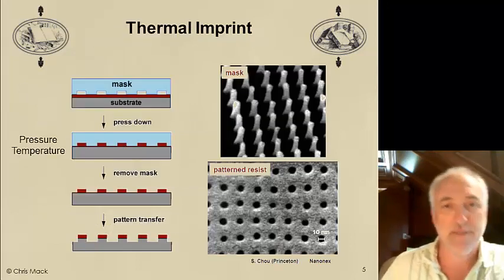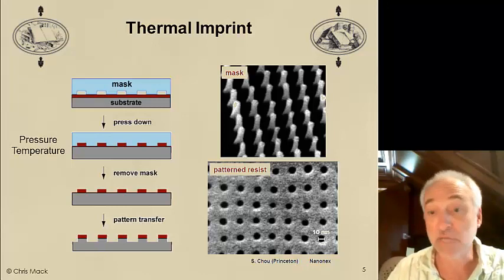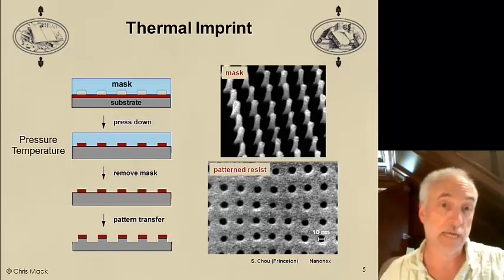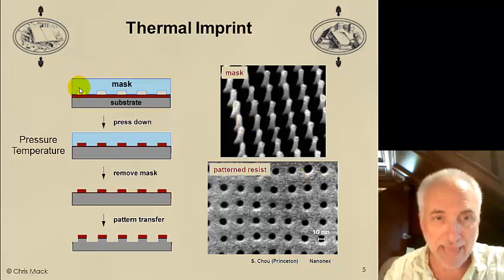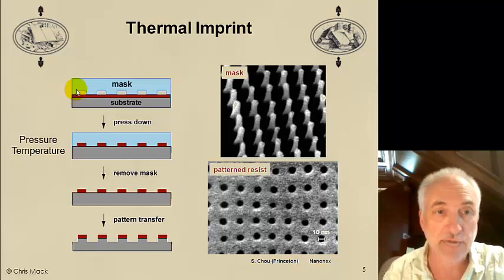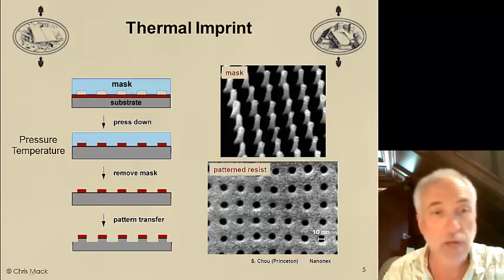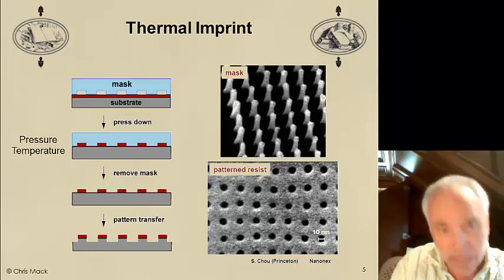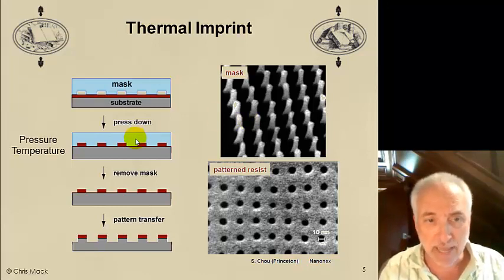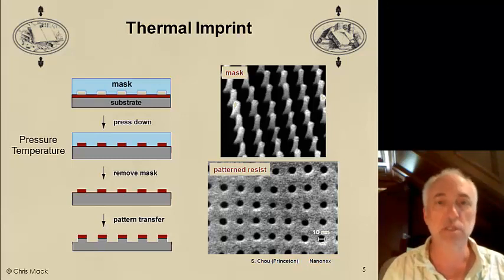Let's go through some of the methods of imprint lithography. The method that got the earliest attention, promoted and developed a lot by Stephen Chow at Princeton, is thermal imprint lithography. It's relatively simple. We begin by making a mask that is often a quartz substrate — similar to the photomask we use in optical lithography — but with a template relief pattern. Here I show just lines and spaces. Then we have a substrate and we put on it some kind of a plastic polymer material that is soft when heated. We heat it up to make this polymer soft, then we press down to push our pattern into this soft material. This is one of the reasons why we call this a soft lithography — because we're using these soft materials to do our imprint.